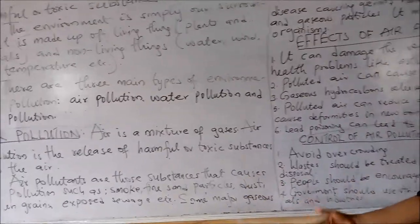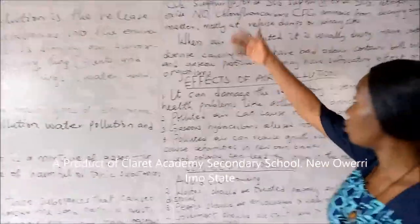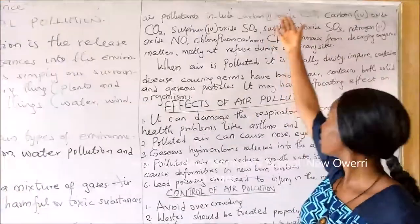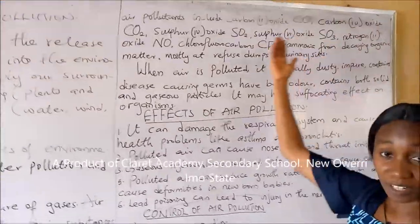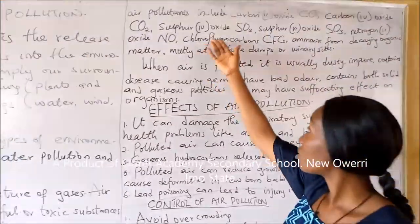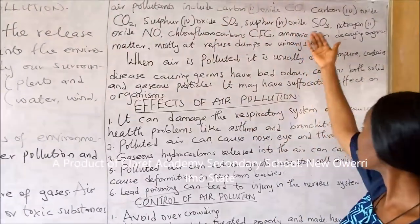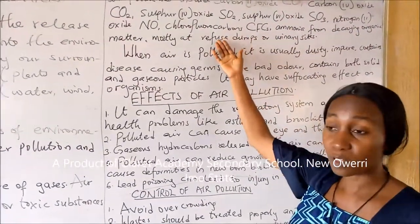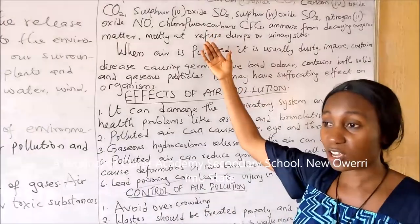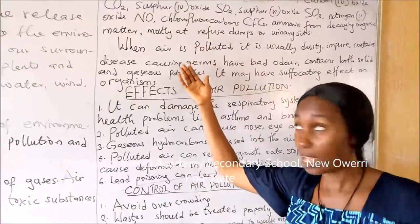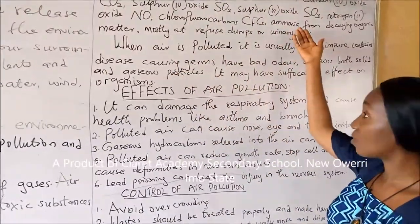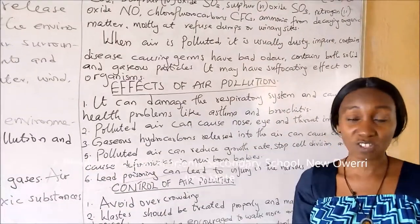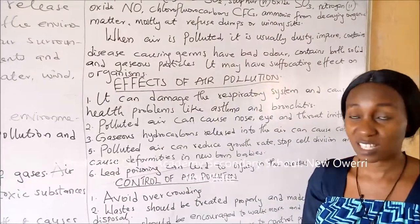Some other major gaseous air pollutants include carbon-2 oxide, which you call carbon monoxide; carbon-4 oxide, which you call carbon dioxide; sulfur-4 oxide; sulfur-6 oxide; nitrogen-2 oxide; fluorofluorocarbons, which are compounds containing fluorine and carbon. Then we have ammonia from decaying organic matter, which is formed mostly at refuse dump sites or sewages.